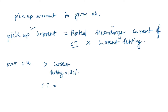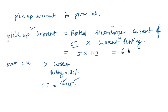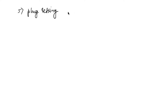The CT secondary side value is 5A and the primary side is 400A. The rated secondary current of the CT is 5A, and the current setting is 130%, which we convert to 1.3. Therefore, the pickup current equals 5 multiplied by 1.3, giving a total value of 6.5 amperes.